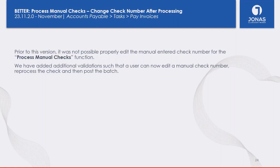We've made a change to manual checks — you can now change the manual check number after processing checks. Before, the check number was grayed out. Now you can edit that manual check number in the invoice processing screen, and then actually reprocess the check and post the batch. As long as you haven't proceeded to post the batch, you can change the number, reprocess, and post.